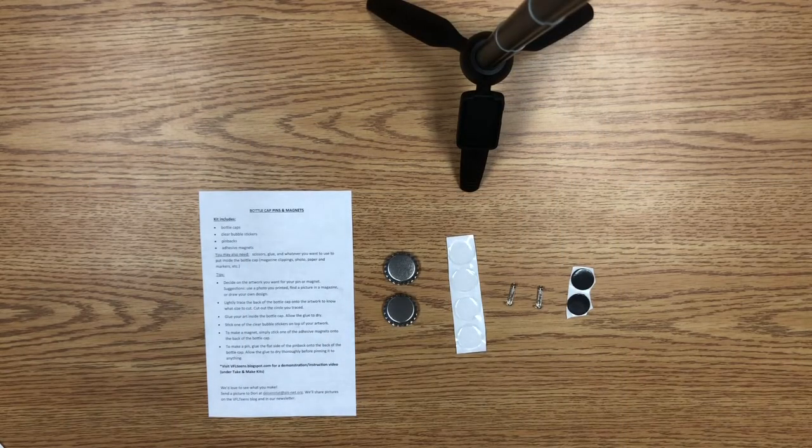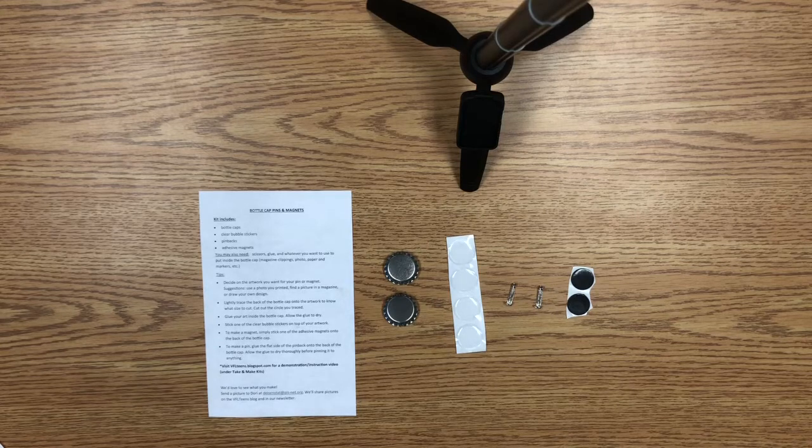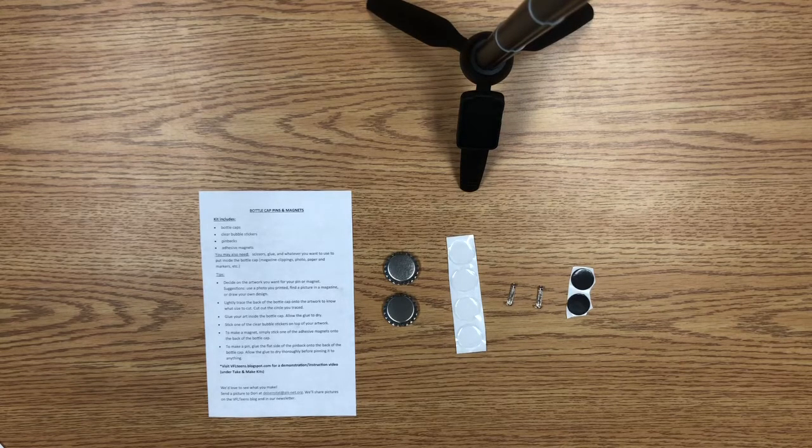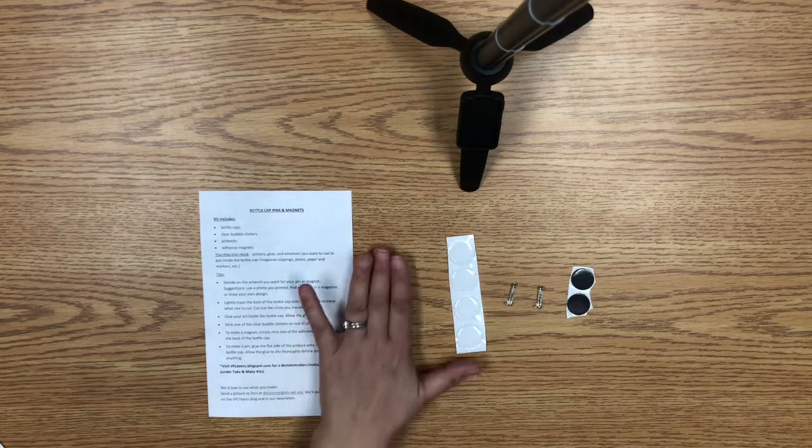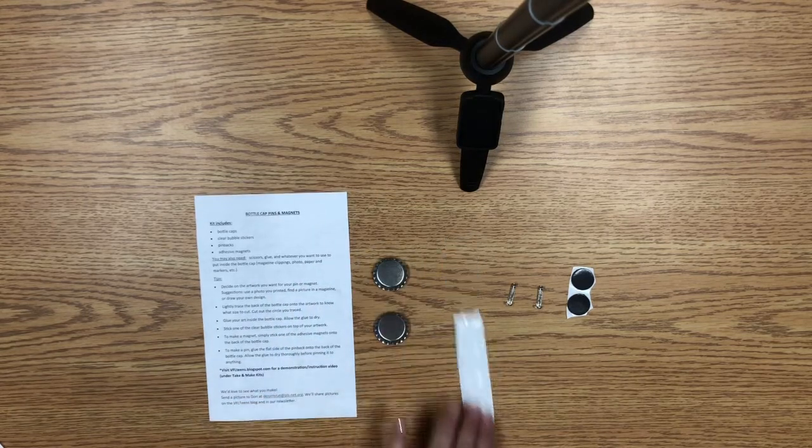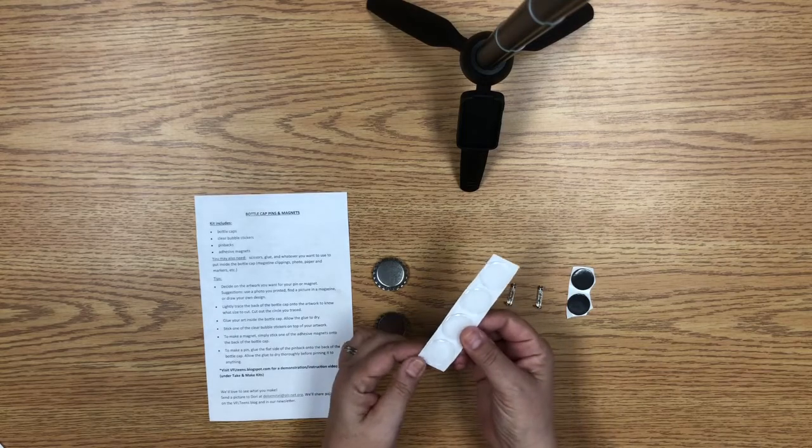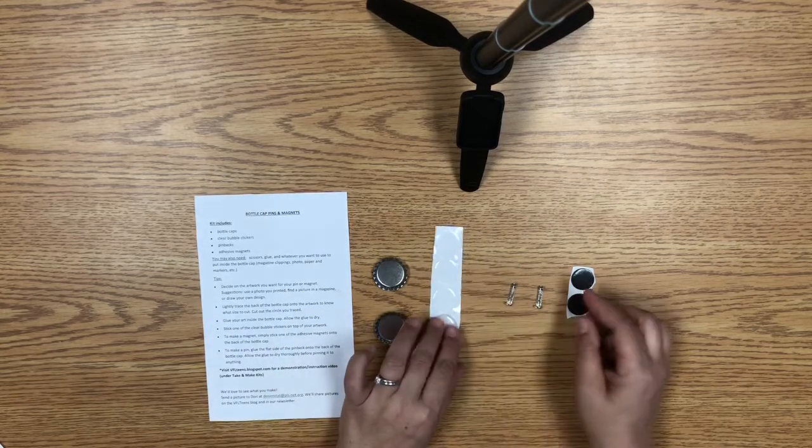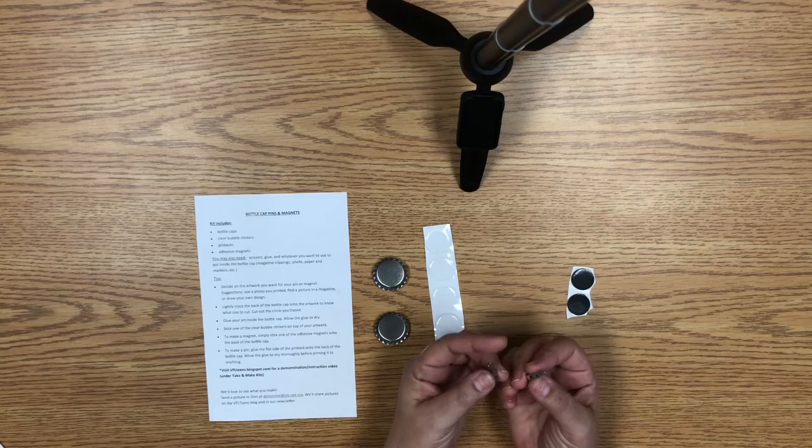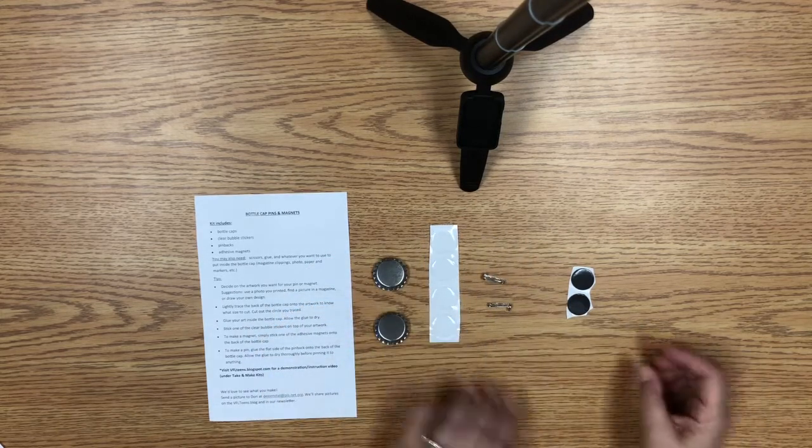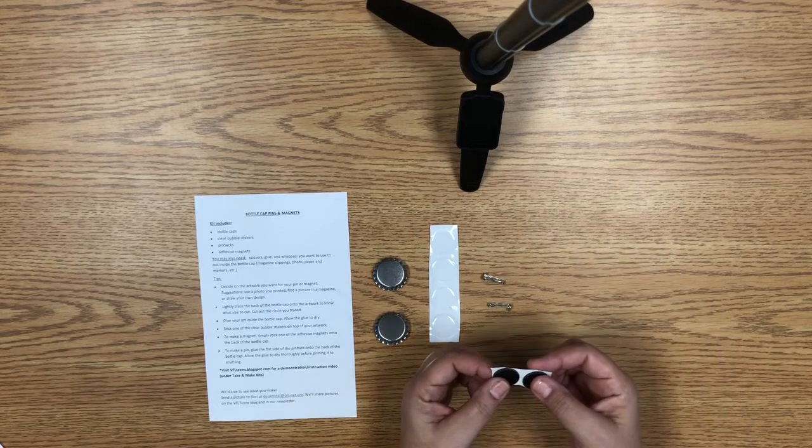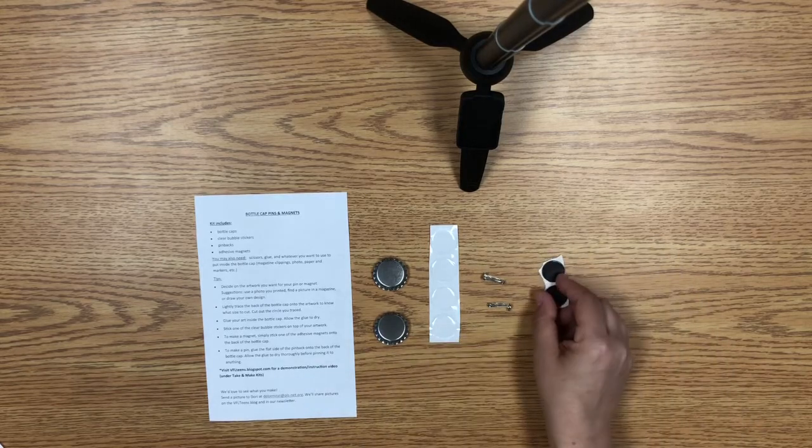If you were able to pick up one of the kits at the library, these are some of the items that you'll find in the kit. You should have some bottle caps to make into your art. These are some bubble stickers that will go on top of your art. We also included some pin backs to turn your bottle caps into pins and some adhesive magnets to turn your bottle caps into magnets.